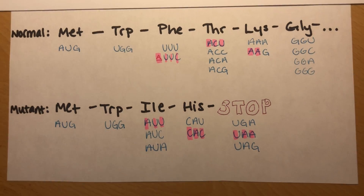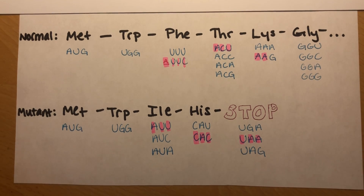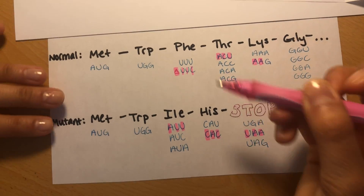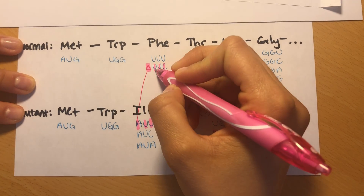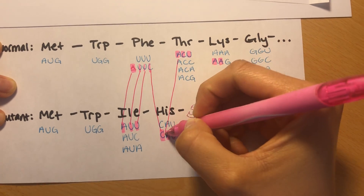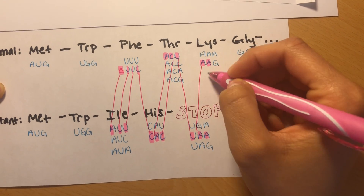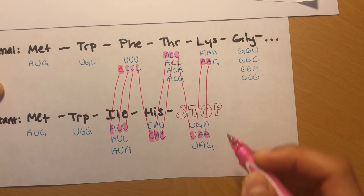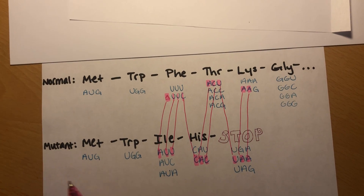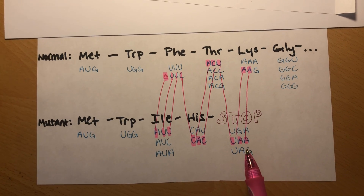As you can see here, the additional A did cause the mutation. Each individual letter in the normal sequence was shifted over 1, resulting in the mutant protein. After histidine, the codons code for a stop — that is why there are no further amino acids following the histidine.